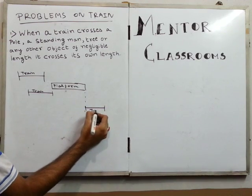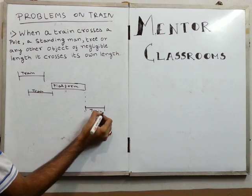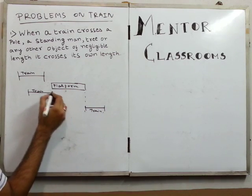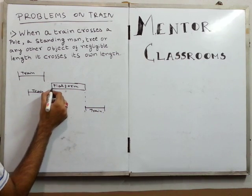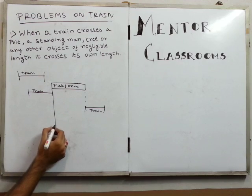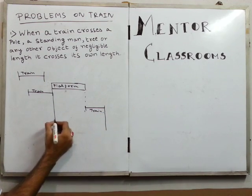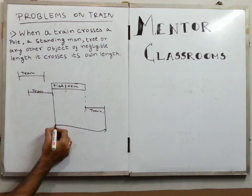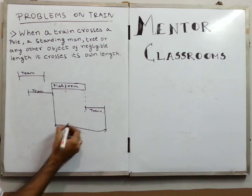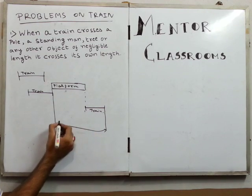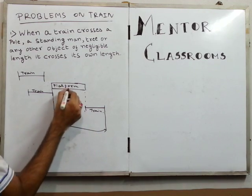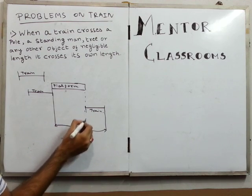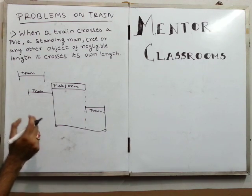Finally, the train crosses the platform. The distance covered by the train is from here to here, so this length is the length of the platform plus the length of the train, as you can see from this picture.